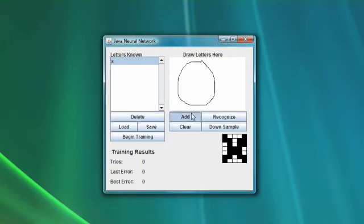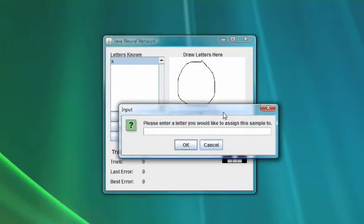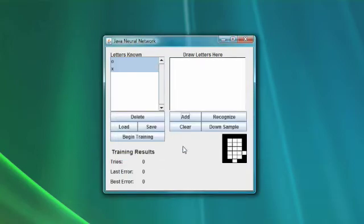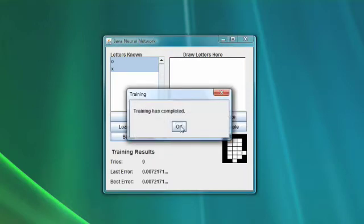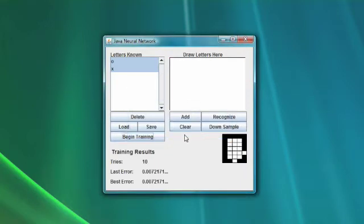We are also going to teach it how to recognize an O. And we are doing the same process. We type O to tell it that it can recognize O. Now it knows X and it knows O. We can train the neural network. We click begin training and the neural network has now trained. It can recognize two letters.